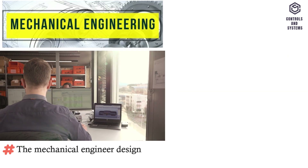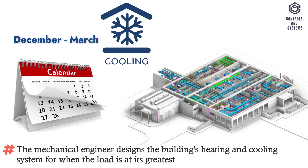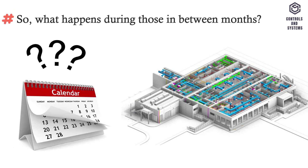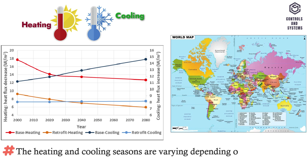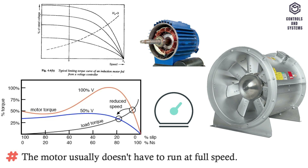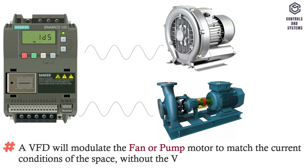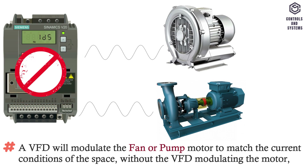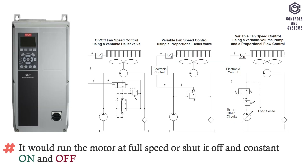The mechanical engineer designs the building's heating and cooling system for when the load is at its greatest level — December to March for cooling and March to June for heating. The heating and cooling seasons vary depending on the country and state. During in-between months, the motor usually doesn't have to run at full speed. Without a VFD, the motor would run at full speed or shut off completely, and constant on and off cycling is not good for motor life.